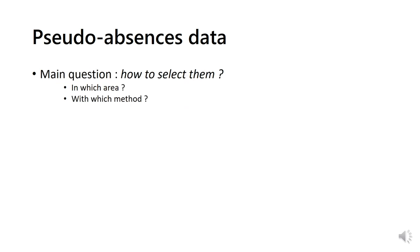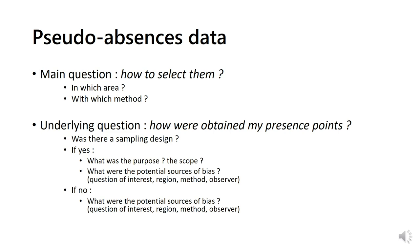Which leads me to the main question about pseudo-absences: how to select them, in which area, and with which method. This hides, in fact, another and maybe more important question, which is how we have obtained my presence points. Was there a sampling design? If yes, what was the purpose? The scope? The hypothesis? And in any case, what were the potential sources of bias? Did the data explore the entire range of the species? Or focalize on a specific area and why? What was the method used? Was it biased? Were there several observers? Did they have the same instructions or training? And so on. The idea is that you want both to be aware of potential bias and, at the same time, try to minimize those that you might add.